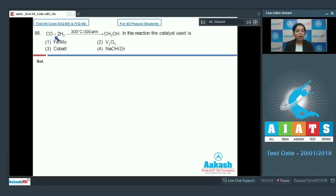Question number 88: Carbon monoxide reacting with hydrogen at 300 degrees Celsius and 300 atmospheric pressure to form methanol. This is the preparation of methanol. In this reaction, the catalyst used is cobalt. The metal cobalt is used here, and that's why the answer for this question is option 3.